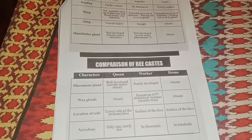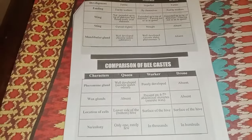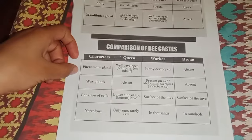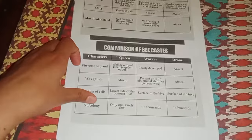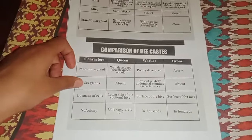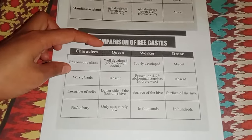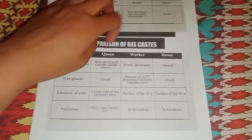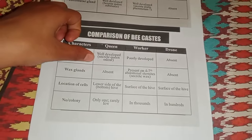Now this is another type of comparison with different characters. You can see pheromone gland, wax glands, location of cells, and number in colony. For the pheromone gland, it is well developed in the queen, poorly developed in the worker, and absent in the drone.